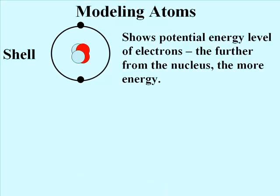To understand how the energy and location of electrons in atoms and molecules explains their chemical properties, we model atoms in two ways. The shell model shown here emphasizes the potential and kinetic energy of electrons. The further from the nucleus, the faster the electrons move.